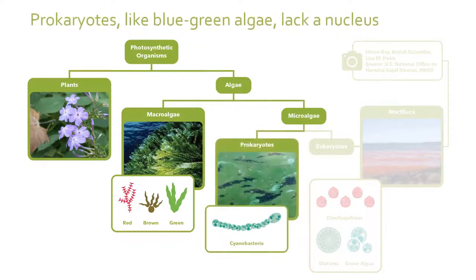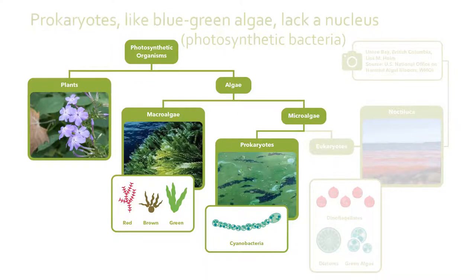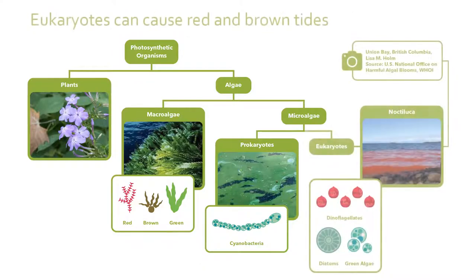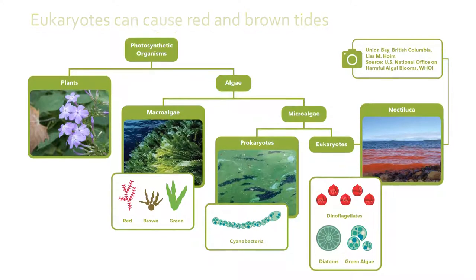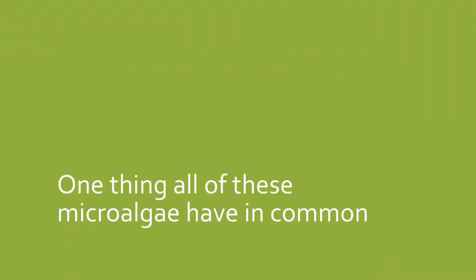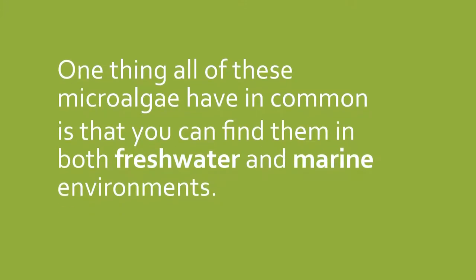Prokaryotes, like blue-green algae, lack a nucleus. This technically makes them photosynthetic bacteria, but they are still important to this discussion. There are also the eukaryotes, like those that cause red and brown tides. One thing all of these microalgae have in common is that you can find them in both freshwater and marine environments.